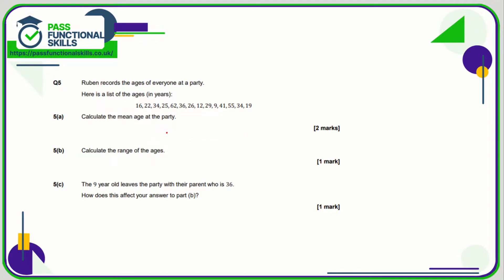Question five is another calculator question. We need to add up all the ages and divide by 14 values. When we add all these figures up we get a total combined age of 420, and 420 divided by 14 comes to a mean age of 30.